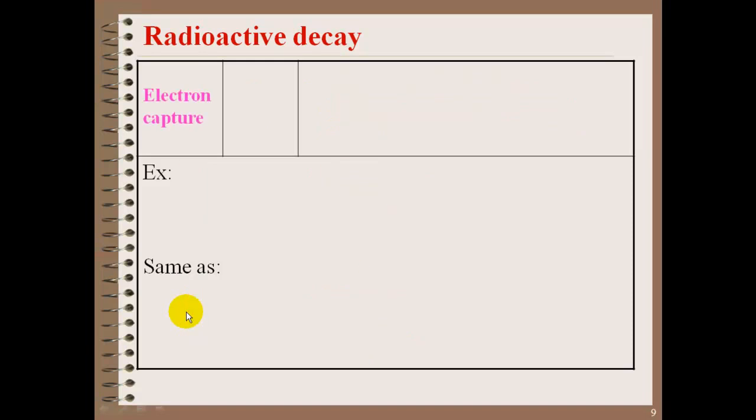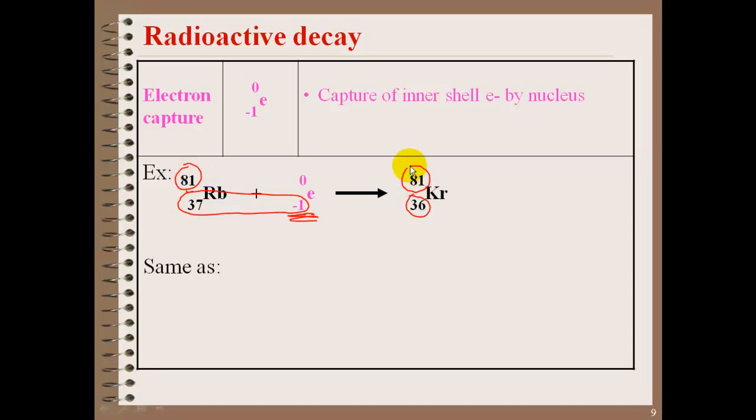Another type of decay is electron capture. Electron capture is actually when an electron from the electron cloud is pulled into the nucleus. When this happens, you're going to notice that our electron is now on the reactant side. Every other type of radioactive decay, the particle was a product. But in this instance, an electron is taken into the nucleus, and it will change around. Here, you'll notice the 37 decreases by 1 because it's a negative charge, but our mass stays the same.